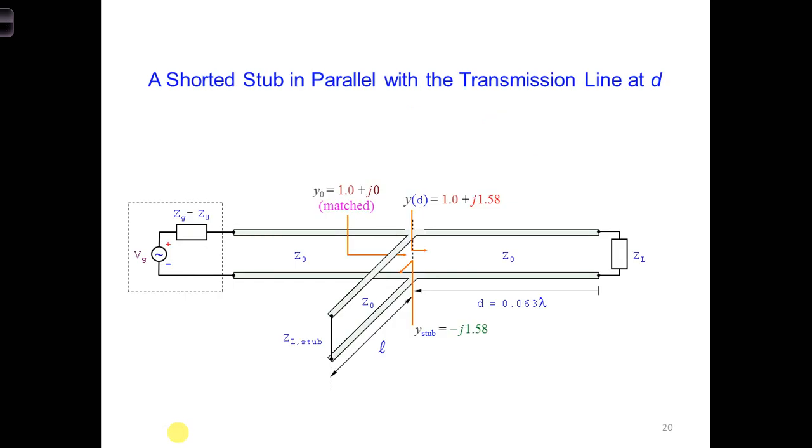If we use an extra section of shorted transmission line in parallel with the load, the geometry would look like this. We need to figure out what length, L, of transmission line we need in order to cancel this J1.58.